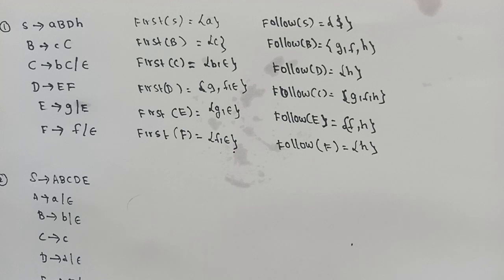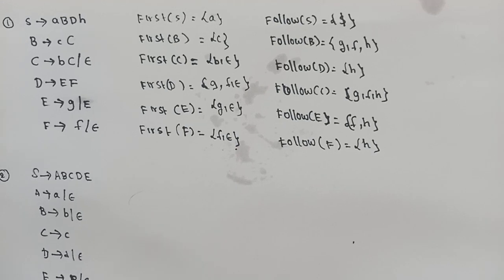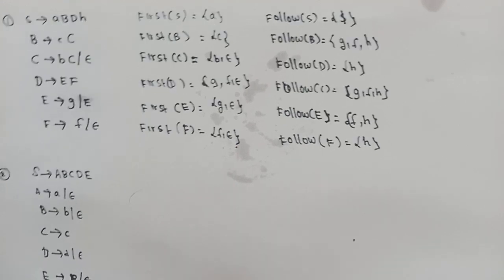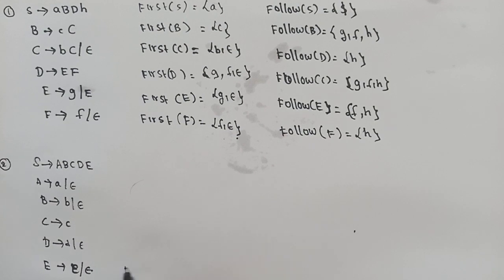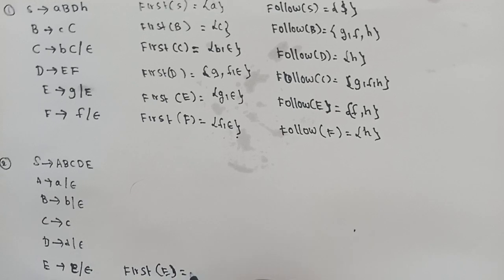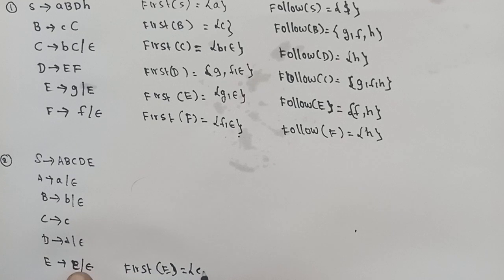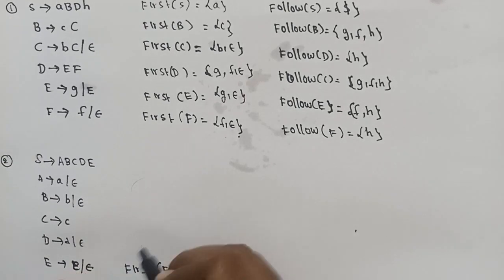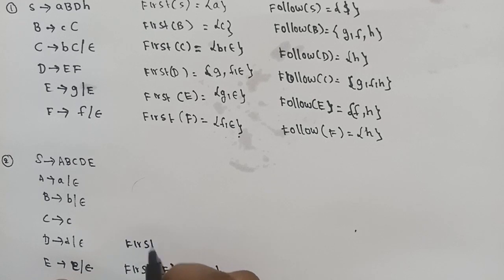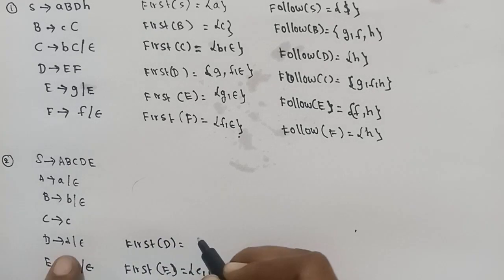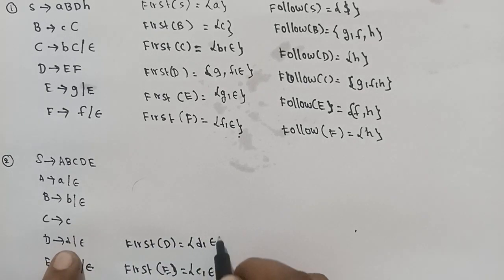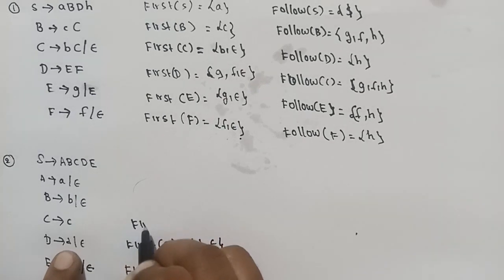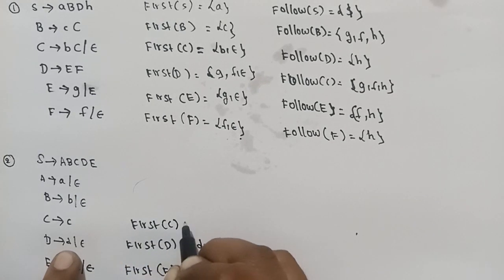Now, the second example. For this new set of productions, the non-terminals and terminals are identified. FIRST of capital E is calculated. FIRST of D — D gives small d and epsilon. Next, FIRST of C.